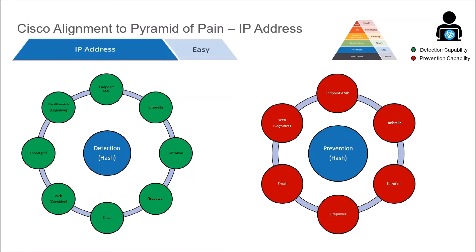Now we move on to IP addressing. Detection and prevention — we know that IP addressing is easy for the adversary to overcome from a defensive perspective. It could be as simple as fast flux, having IP addresses swap out very, very quickly, and that doesn't give defenders enough time to really build up any reputational intelligence around that IP address.